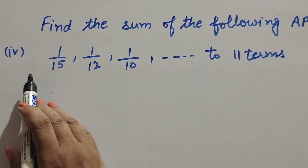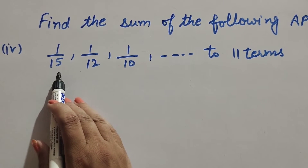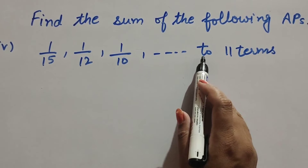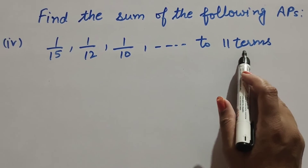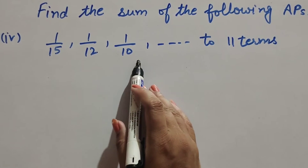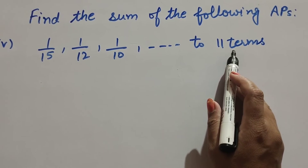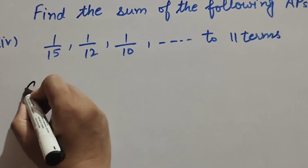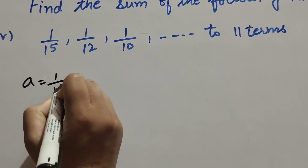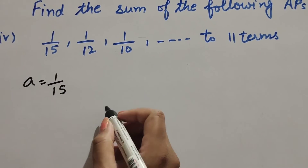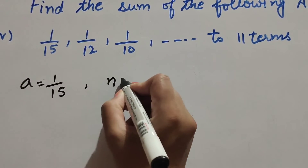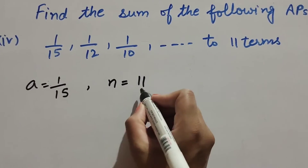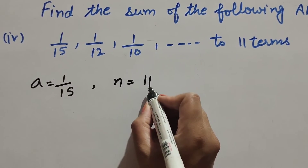In the fourth part, the AP series is 1/15, 1/12, 1/10, and so on up to 11 terms. We find the sum of 11 terms. Given: first term a = 1/15, total number of terms n = 11.